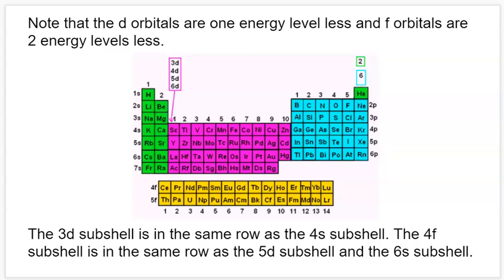Welcome back, AP Chemistry students. We're still on section 1.5 on atomic structure and electron configurations, and this is video part three for that section. Last time we were talking about electron configurations and the Aufbau principle. The electron configuration shows us how the electrons are arranged in energy levels, subshells, and orbitals. The Aufbau principle was an idea used to figure out what order those subshells and orbitals filled in.